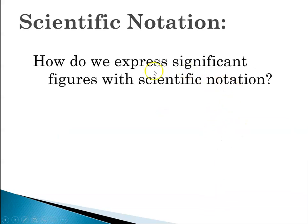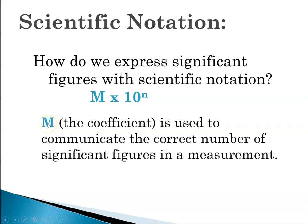So how do we express significant figures with scientific notation? Because we're going to be using big and small numbers but we also always have to express them correctly in terms of significant figures. So in that format of m times 10 to the n, it turns out that m, the coefficient, is how we communicate the correct number of significant figures for a measurement.